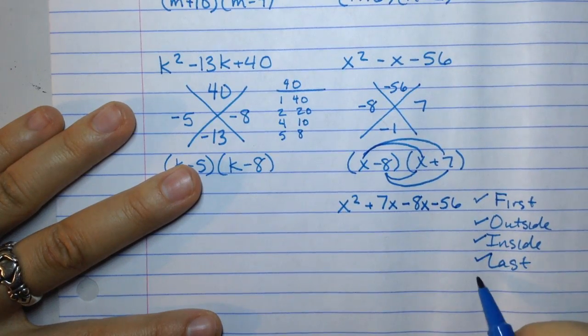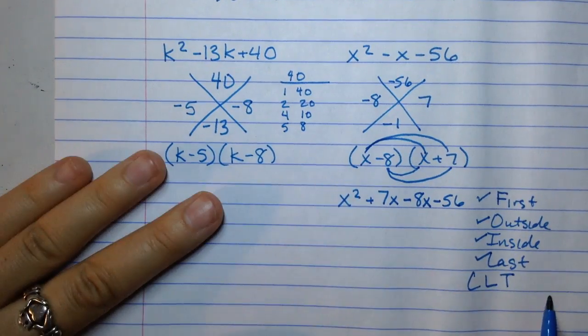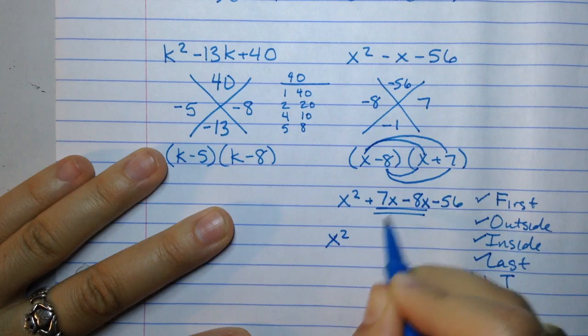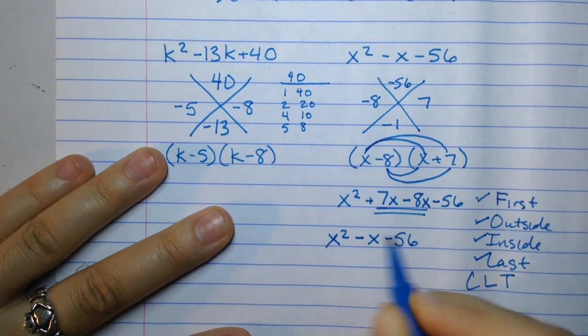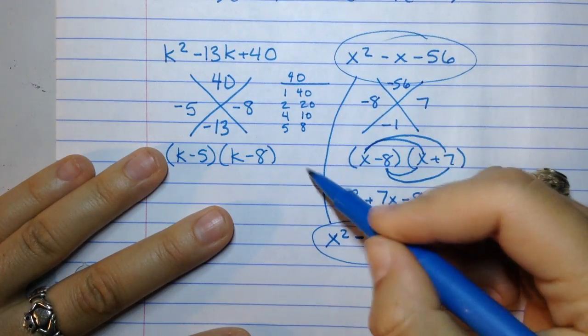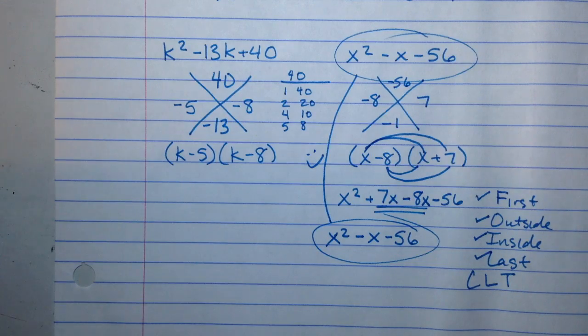All that's left to do is to combine like terms. Here are my like terms right here. If I combine them together, I get x squared minus x minus 56. And check it out. Hooray. It's the same thing. So factoring again is just backwards distribution, which is backwards multiplication. And factoring is an essential skill that you need to have whenever you leave algebra.